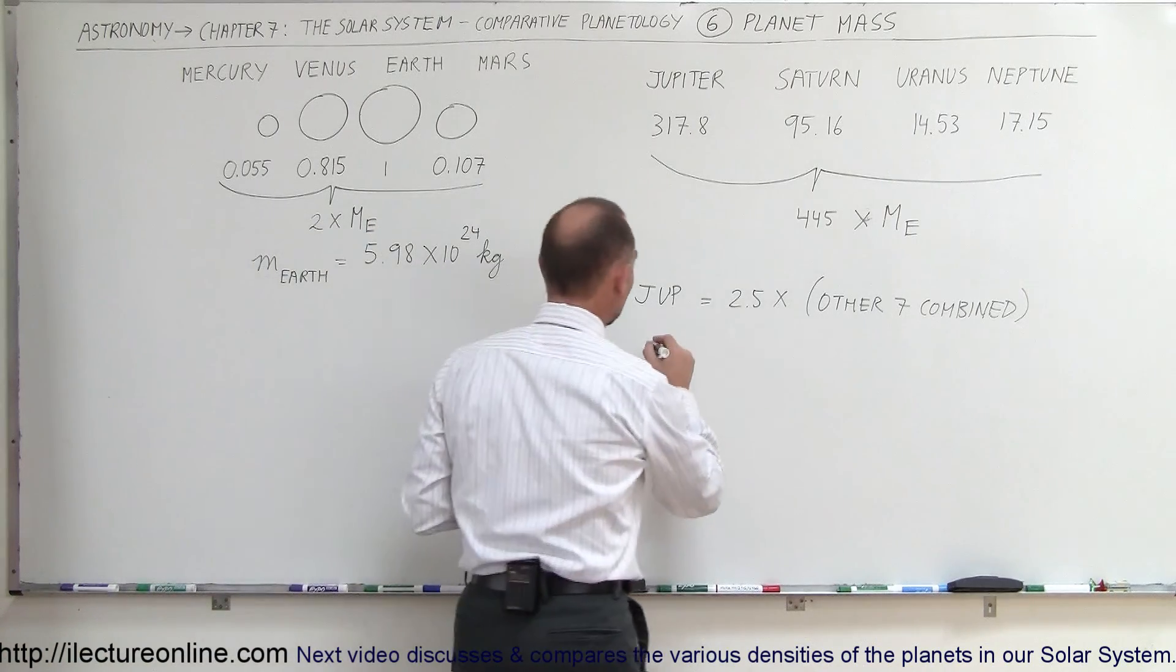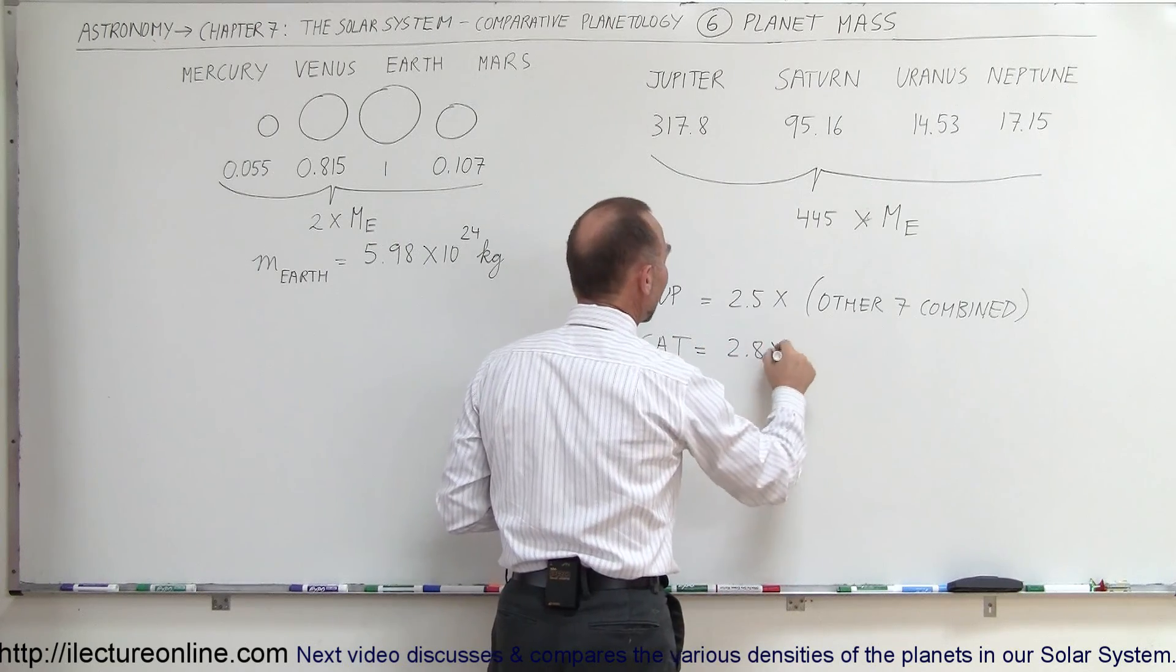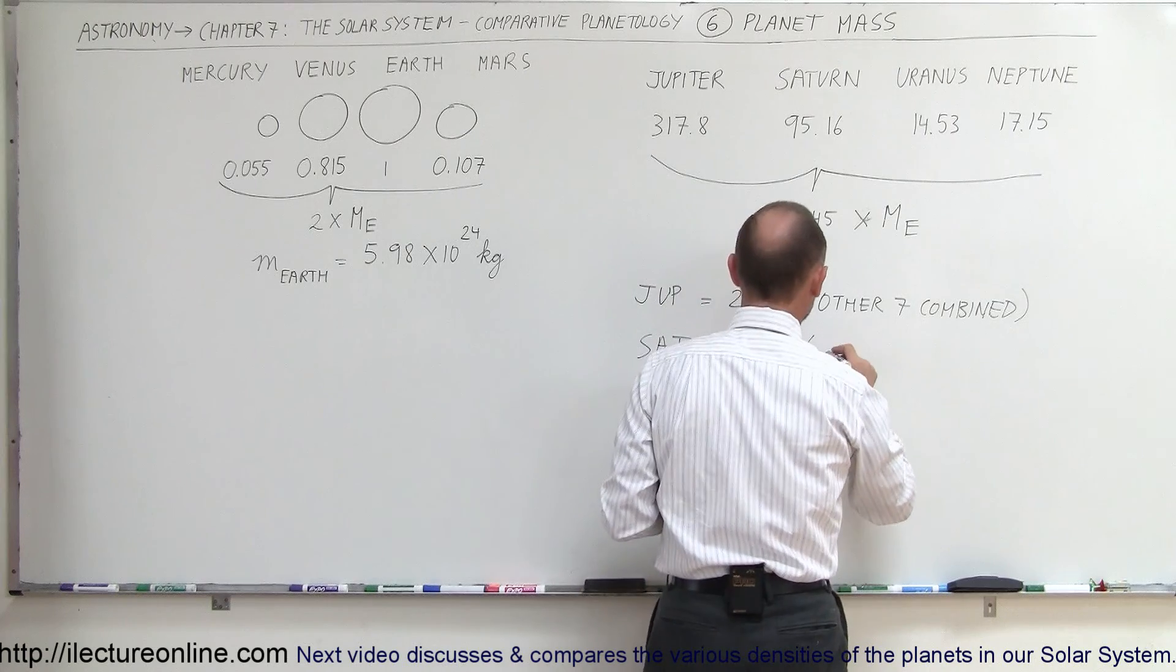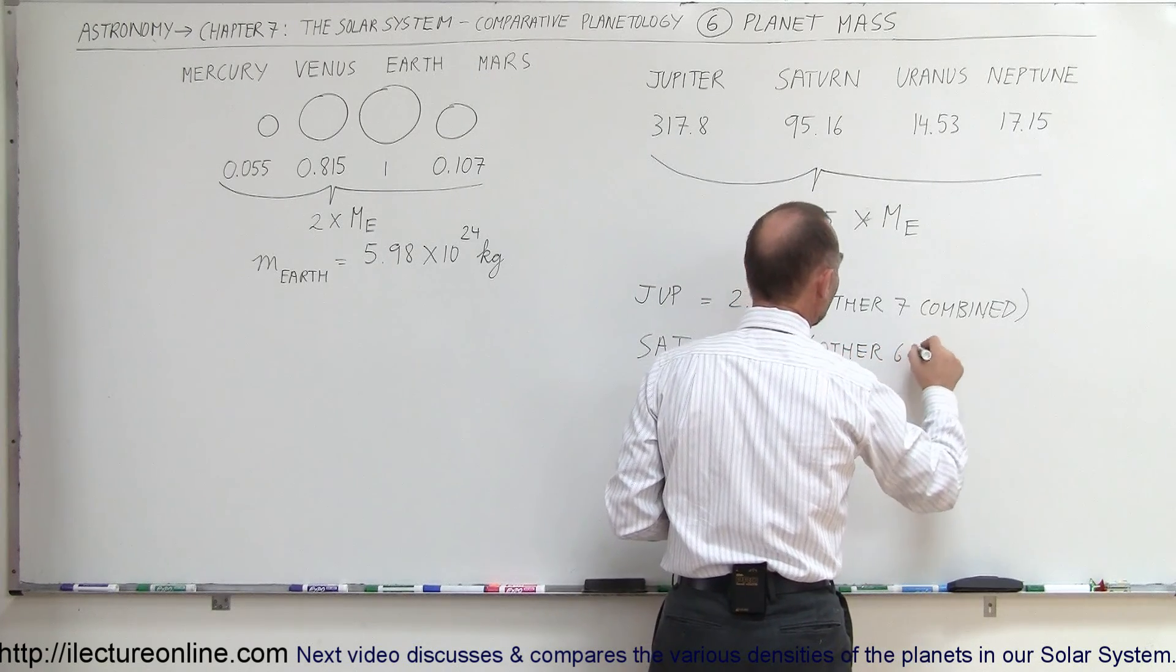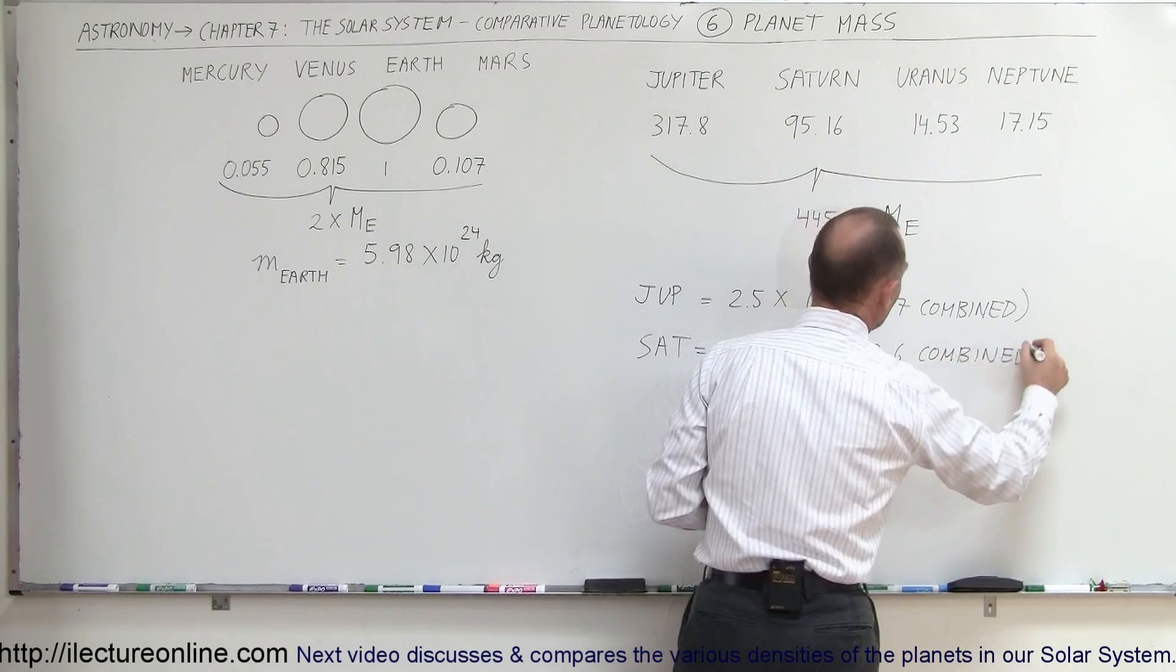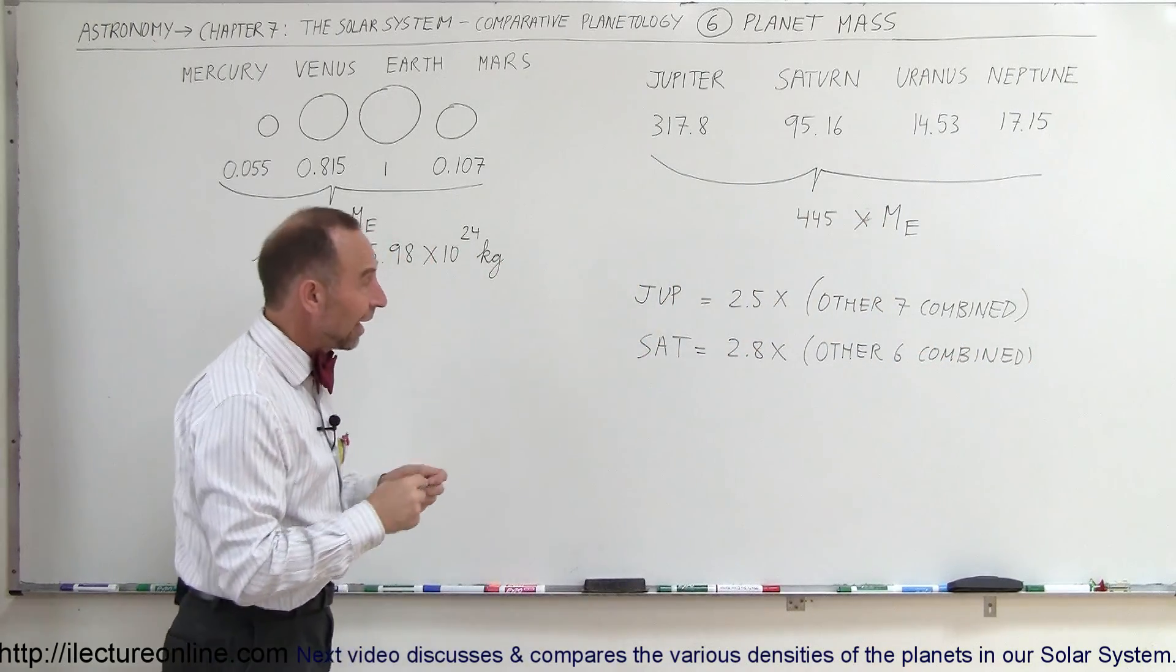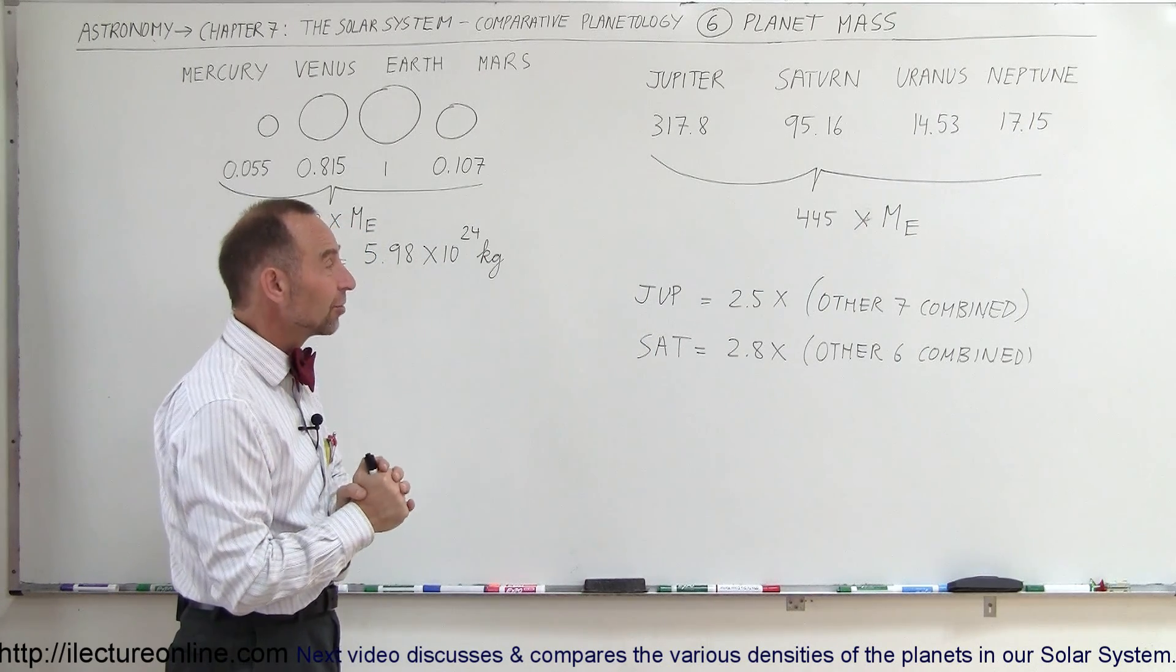If we take Saturn as a comparison, Saturn is about 2.8 times the other 6. If we exclude Jupiter, of course, Saturn is again much, much bigger than all the other planets. The other 6 combined, you can see that Saturn also is one of the giant planets and much, much larger than all the other planets combined, almost 3 times as big as the other 6 combined.